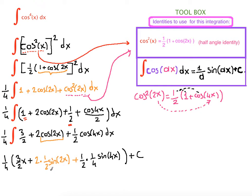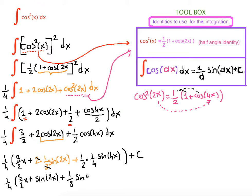Now we have to clean up. One fourth is here: three over two x, plus the twos cancel out giving sine of 2x, plus one half times one fourth is one eighth sine of 4x plus c.